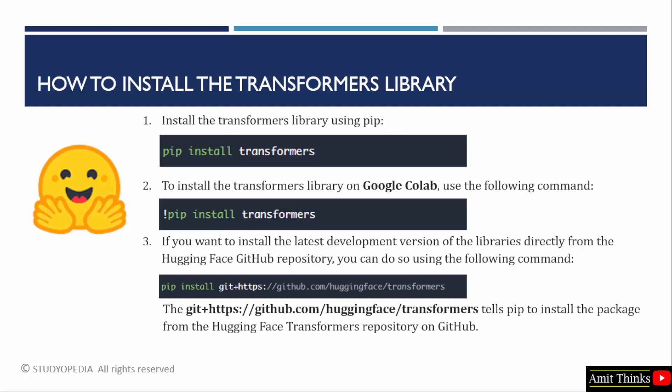Let us see how to install the transformers library. Here are different ways. You can use pip to install the transformers library. Pip is a package manager to download, install, and manage Python packages and libraries. You can also use Google Colab — note there is an exclamation sign in the syntax if you are installing it on Google Colab. You can also install the transformers library directly from the HuggingFace GitHub repository.